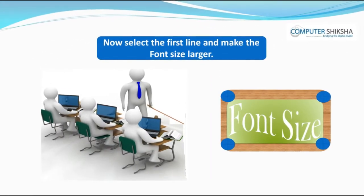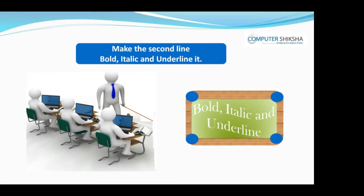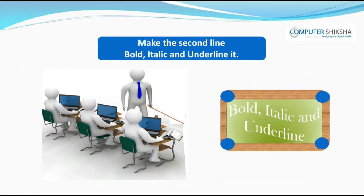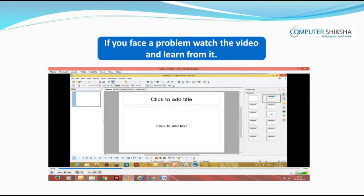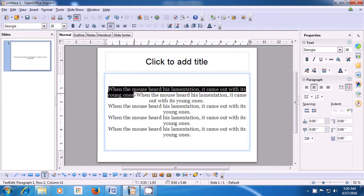Now, select the first line and make the font size larger. Make the second line bold italic and underline it. If you face a problem, watch the video and learn from it. Just watch this video and see how we can make changes to the text or fonts. To make any changes, first you need to select the line on which you want to make a change — as shown in the video, we select the first line.